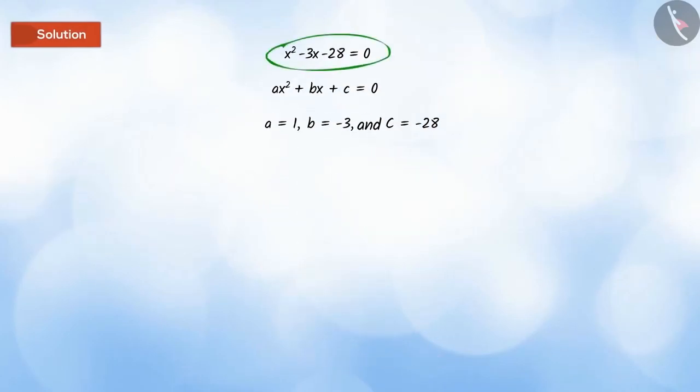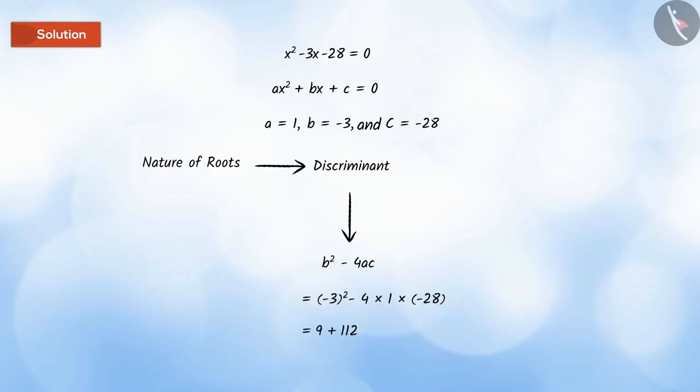How can we determine the nature of the roots? For this, we need to find the discriminant of the quadratic equation, that is, B squared minus 4AC. On substituting the values of A, B and C, we get the value of discriminant to be 121.